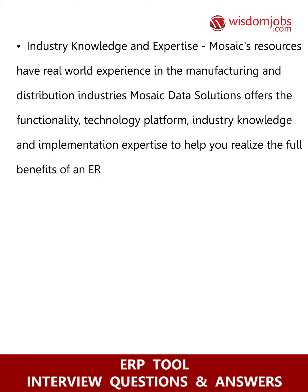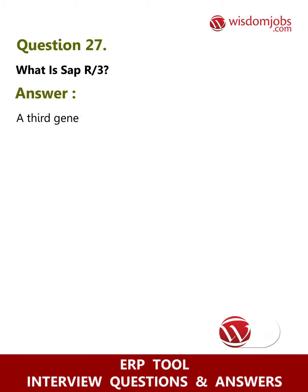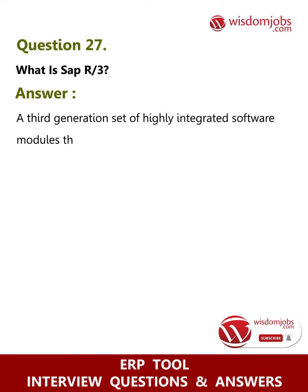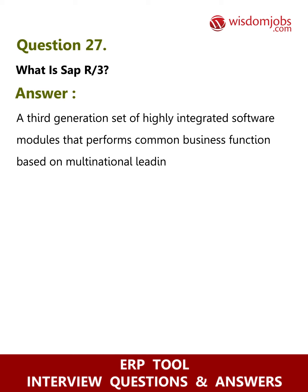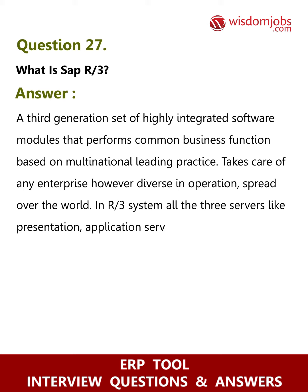Question 27: What is SAP R3? Answer: SAP R3 is a third-generation set of highly integrated software modules that performs common business functions based on multinational leading practices. It takes care of any enterprise, however diverse in operation or spread over the world. In the R3 system, all three servers — presentation server, application server, and database server — are located at different systems.